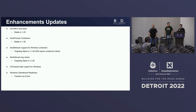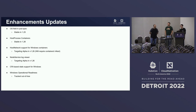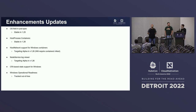I'll give a little overview of the enhancements that SIG Windows is working on. The first is the OS field in the pod spec, which recently graduated in the last release to stable. Next is host process containers — we had a whole talk about that earlier in the conference. New is host network support for Windows containers, targeting alpha in Kubernetes 1.26. There's also the node service log viewer, hopefully going alpha in 1.26 as well. We've been working with SIG Node for CRI-based stats parity on Windows and Linux, and next is operational readiness.